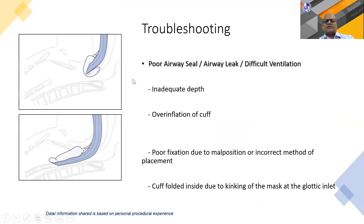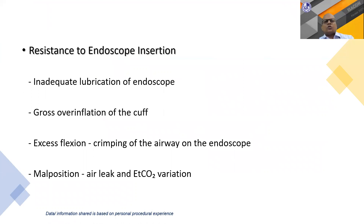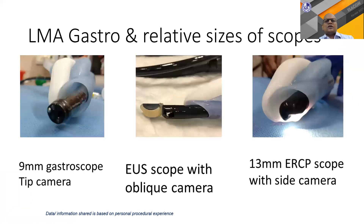Troubleshoot before handing over to the endoscopist. Inadequate depth of anesthesia is a common cause of malposition and should be avoided. Overinflation of the cuff can cause the LMA to curve and enter the glottis, producing irritation and cough. Resistance to gastroscope insertion can be caused by inadequate lubrication, gross overinflation of the cuff, excessive flexion causing crimping of the airway, or malposition.